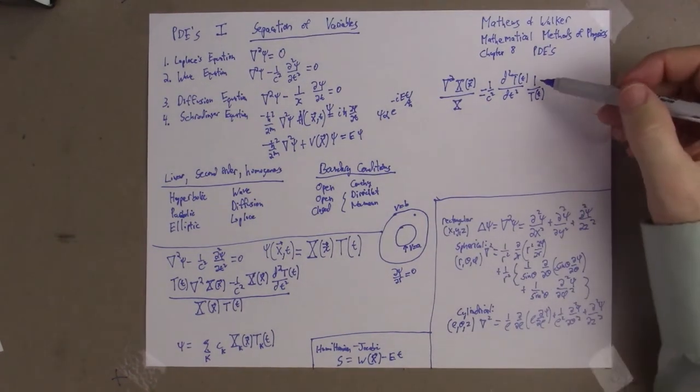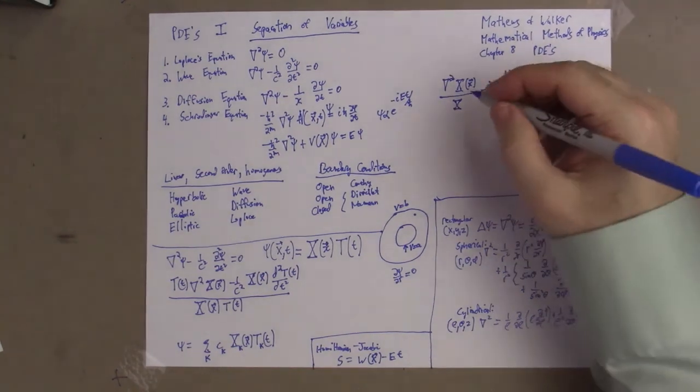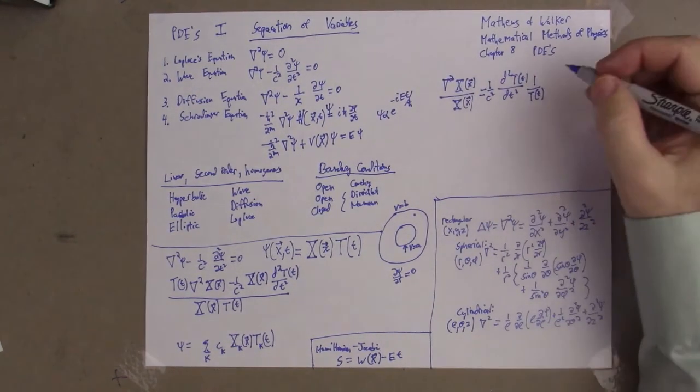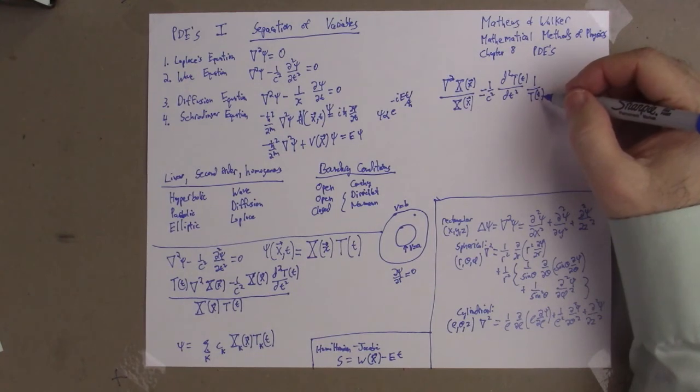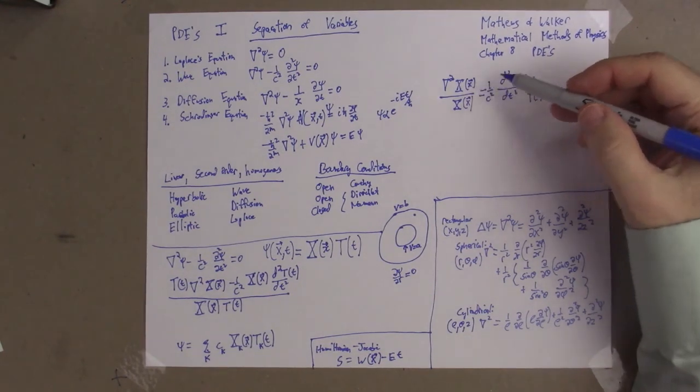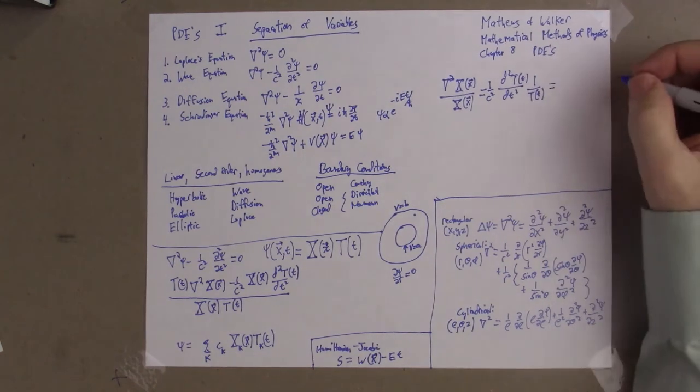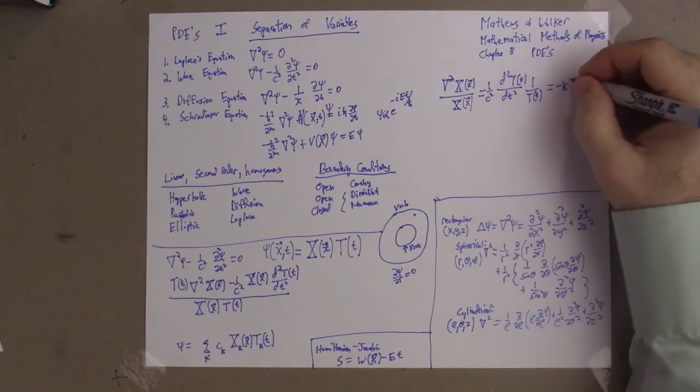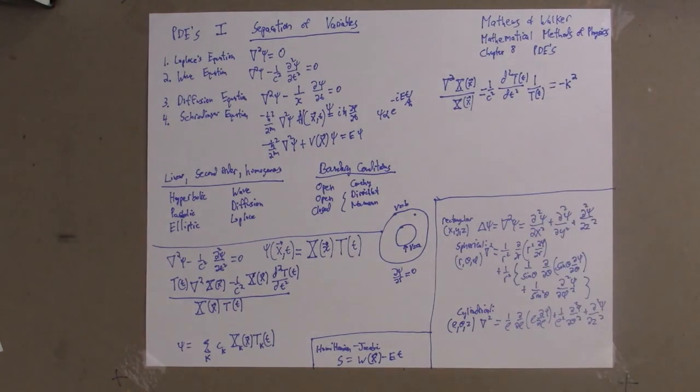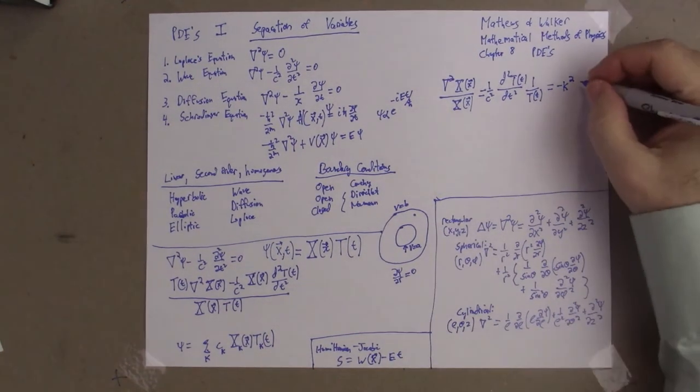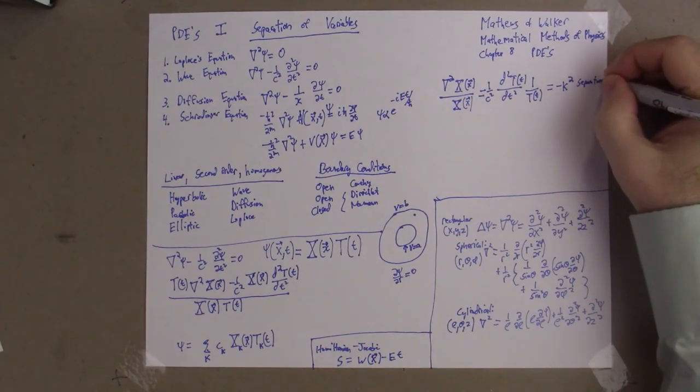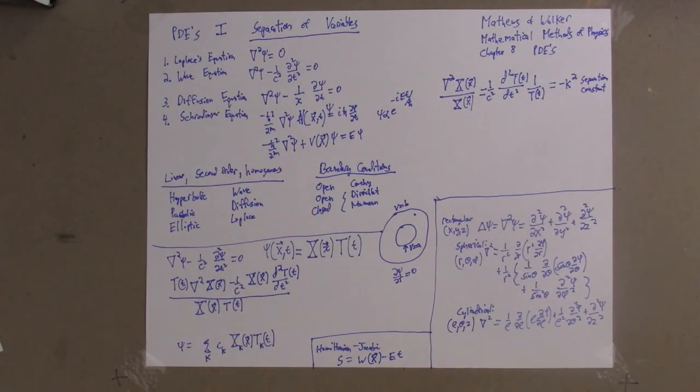Now this equation is very interesting. The left-hand side only depends on spatial variables; the right-hand side only depends on time variables. The only way a function of x can be equal to a function of t for all x and t is for both of them to be equal to a constant. So we end up equating this to what's called the separation constant. I'm just going to call it minus k squared; there's just a reason why it works out better, but that's called the separation constant.